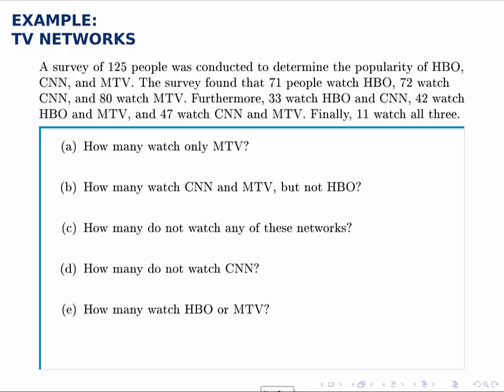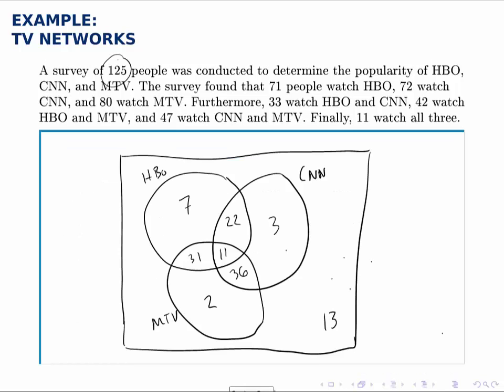So for instance, part A, how many watch only MTV? If we go back to the diagram, only MTV means in the MTV circle, but outside these intersections, which is just those two people.